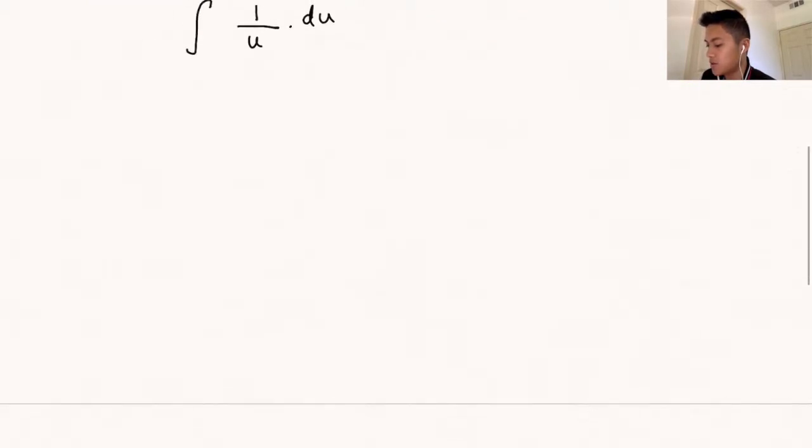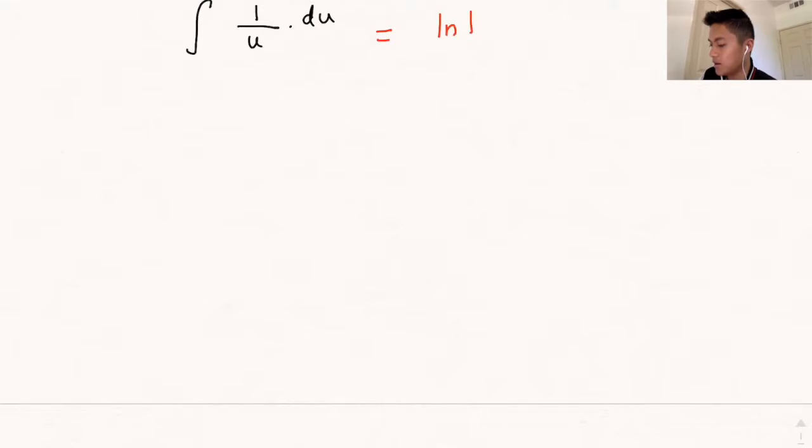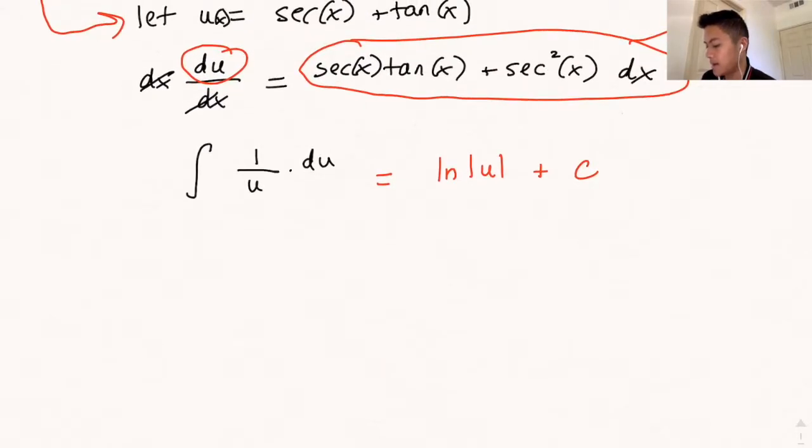Now remember, one over u du just equals the natural log of u plus a constant. But we will substitute the definition of u back into there.